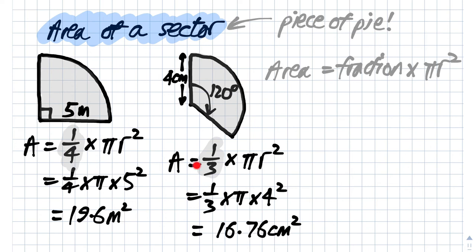In the second one we can see it's a third, because it was 120 degrees out of the 360. So it's a third times pi times radius squared. We end up with 16.76 centimeters squared to two decimal places.